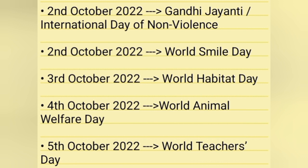2nd October 2022 is observed as Gandhi Jayanti, the birthday of Mahatma Gandhi, and this day is also observed as the International Day of Non-Violence. The International Day of Non-Violence is marked on 2nd October, the birth anniversary of Mahatma Gandhi, the leader of the Indian independence movement and the pioneer of the strategy of non-violence and his crucial role in gaining independence for India.